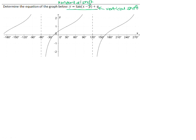The standard tan graph has its asymptotes at negative 90 and positive 90. This graph has its asymptotes 30 degrees to the right of negative 90 at negative 60, and 30 degrees to the right of 90 at 120.